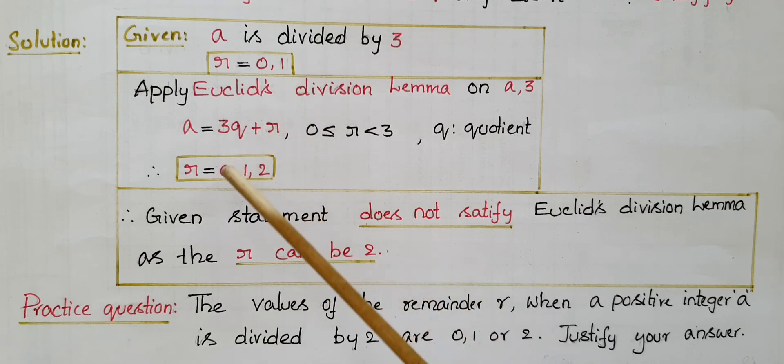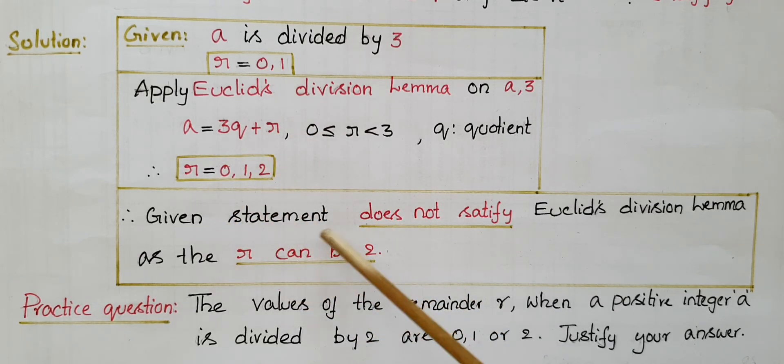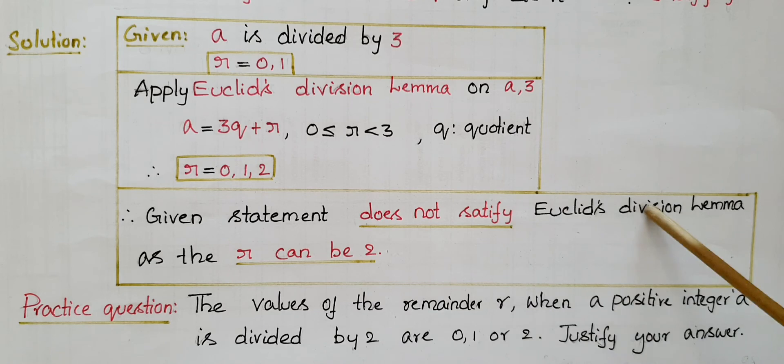So the r value can be 2. The given statement does not satisfy Euclid's division lemma as the r can be 2. This is a practice question you can practice.